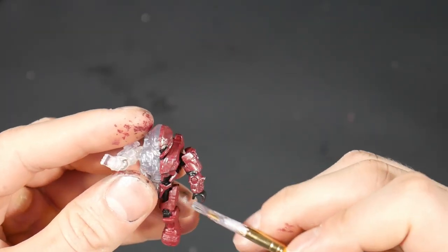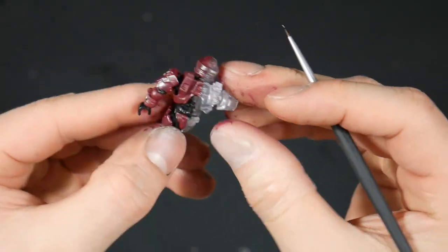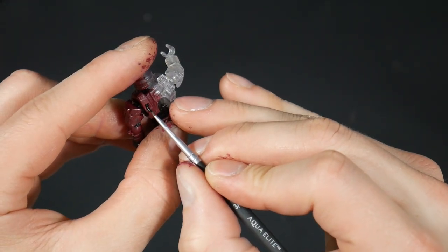And then once we had that done we also hit it with a silver dry brush as well and a little bit of black detailing.